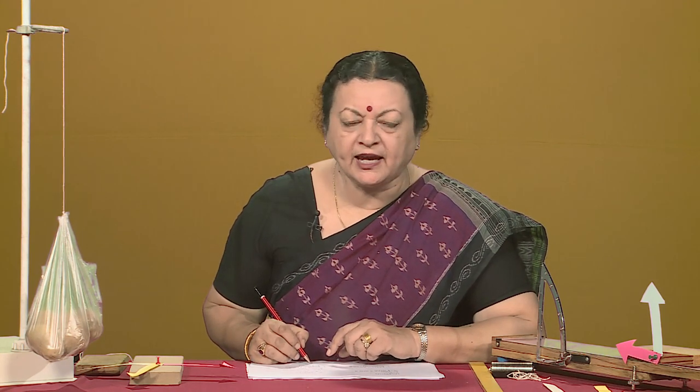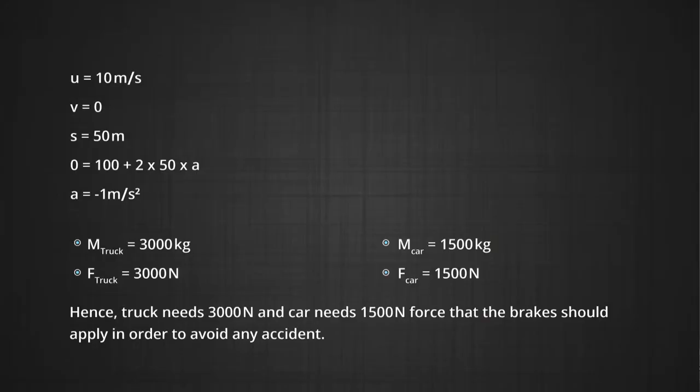This is now easy because we get the braking force for the two vehicles. One vehicle is of lesser mass and the other of higher mass, so the braking force for the two would be different even though they were travelling with the same speed. The truck driver had better be very alert.